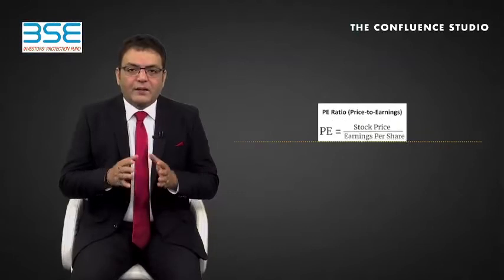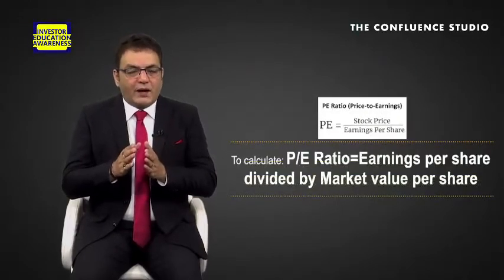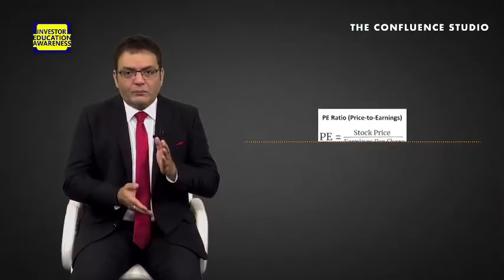The PE Ratio of a stock gives you an idea of how many years it would take for the company's basic EPS to repay your investment costs — without taxes, growth, and if all the earnings were paid out as cash dividends. You can also invert the PE Ratio to calculate the profits of the company. To calculate: PE Ratio equals Market Value Per Share divided by Earnings Per Share.